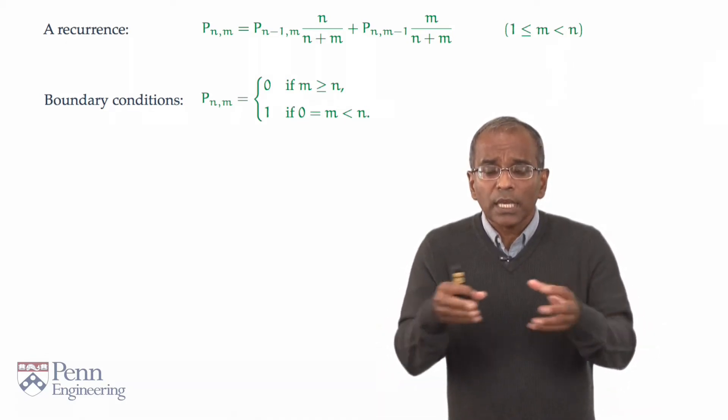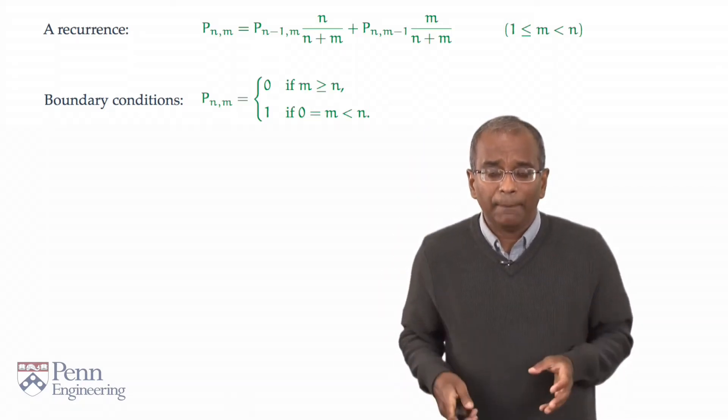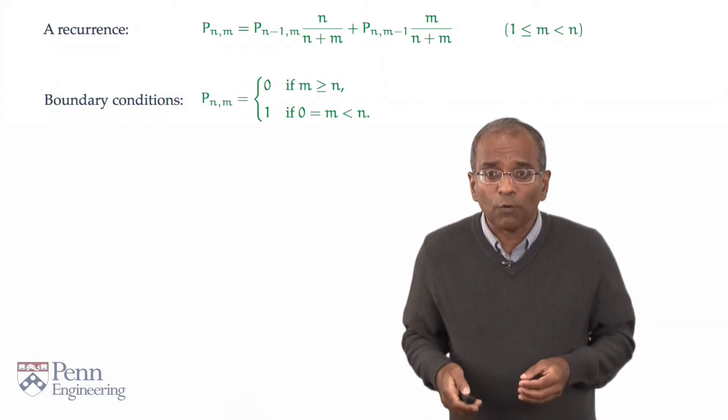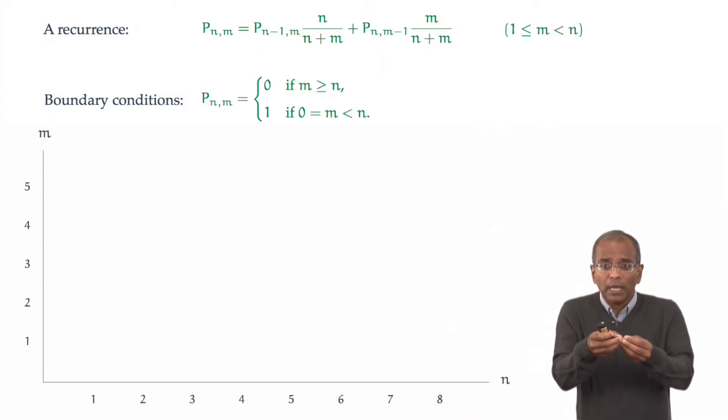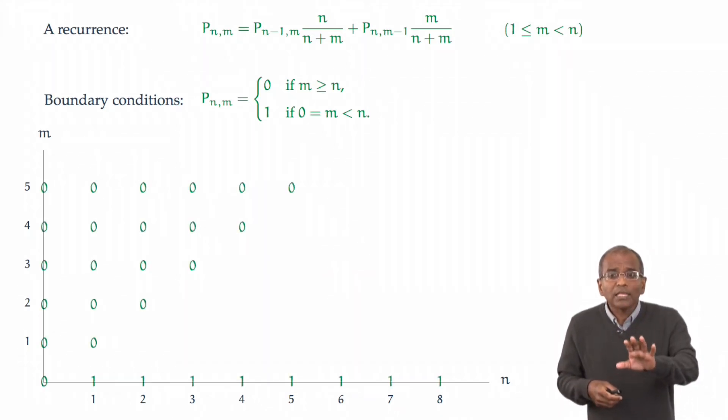We have certain boundary conditions. Now, this gives us a two-dimensional array of values p of n and m. The boundaries are specified for us. We have axes n and m starting at the origin and increasing through positive integers. The boundary conditions tell us that along the y-axis, the probabilities are 0 because m exceeds n. Along the x-axis for positive n, the probability is 1 because if Bob gets no votes, Jane always leads.